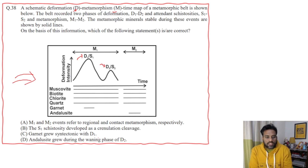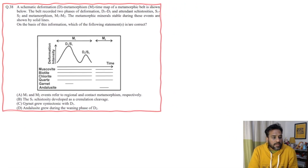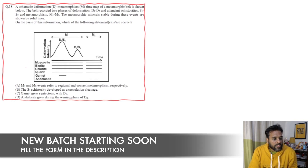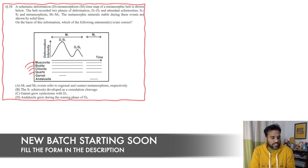To answer this question, we have to look at the graph shown here. If we focus on muscovite, biotite, chlorite, and quartz — these minerals were present throughout the time, irrespective of which event it was. Muscovite was present through M1, M2, D1, D2 — and so was biotite, chlorite, and quartz. The change that we see is in the garnet and andalusite minerals.